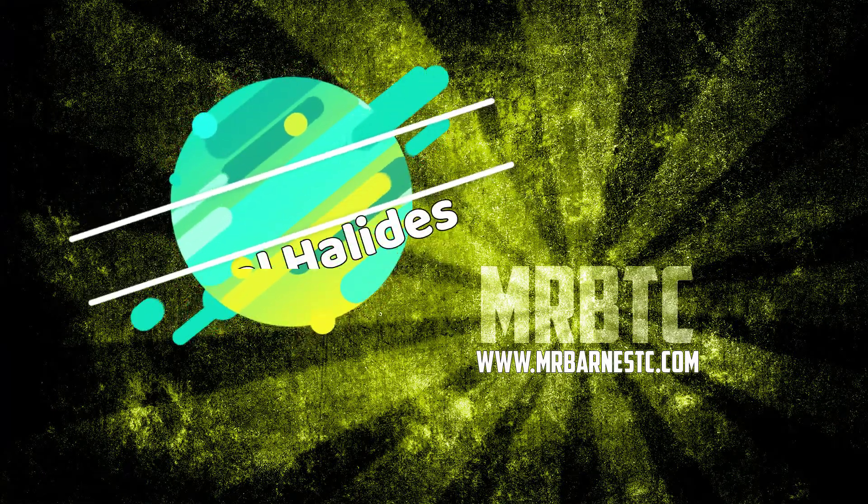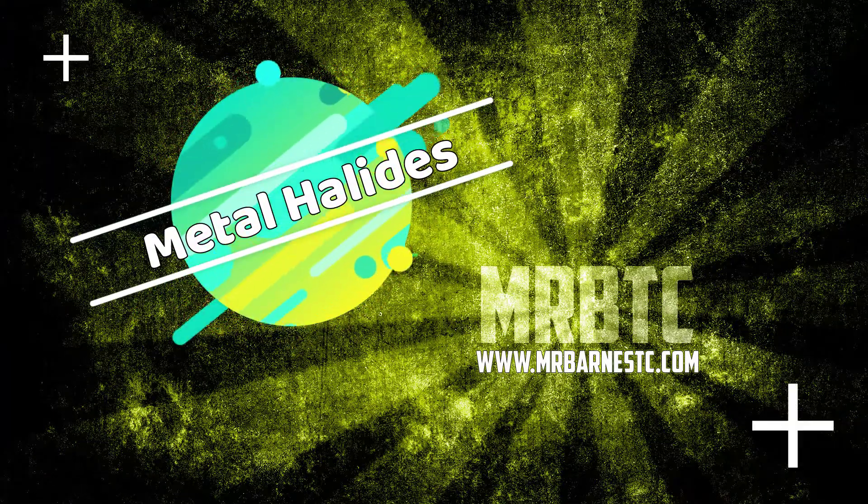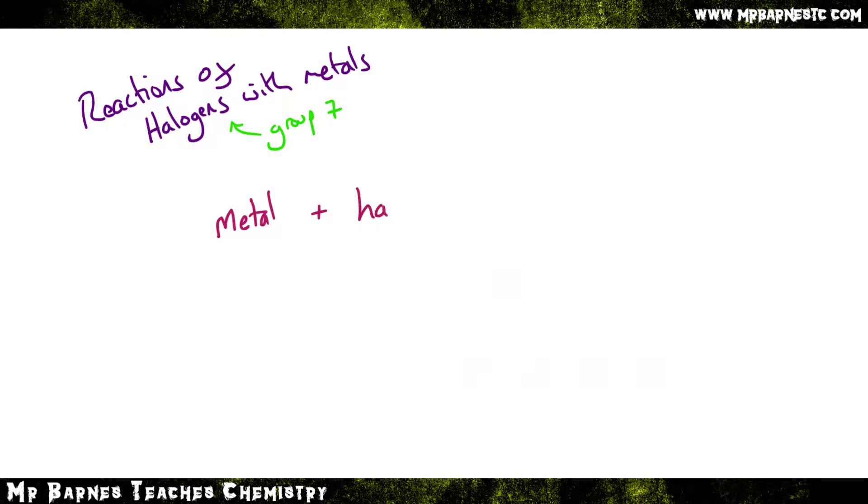Hi guys, welcome to this video looking at how the halogens react with metals to make metal halides. If we start off with the word equation then, nice and simply, if you take a metal, you react with a halogen, it will make a metal halide.